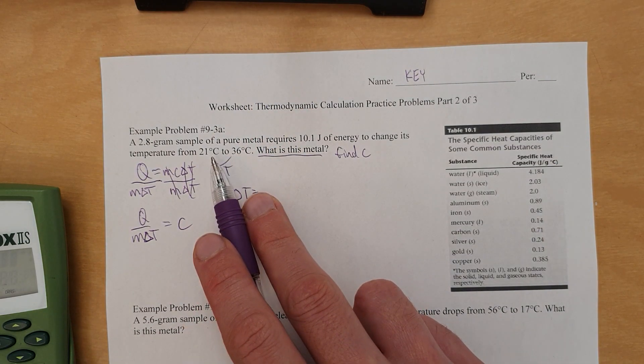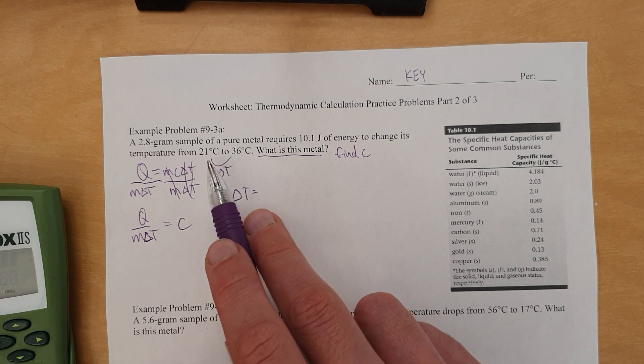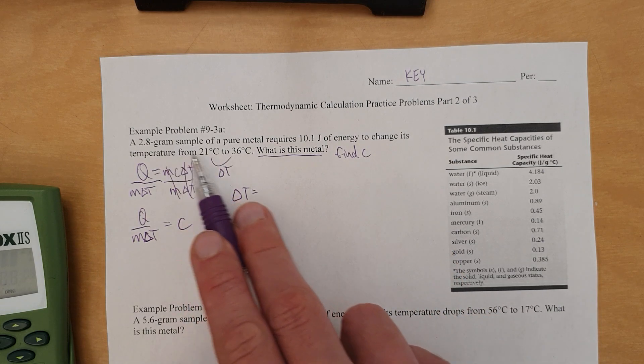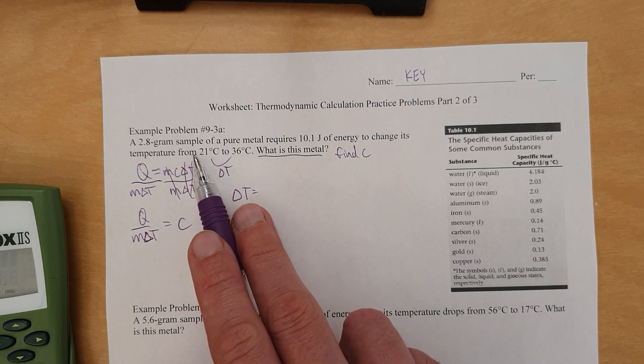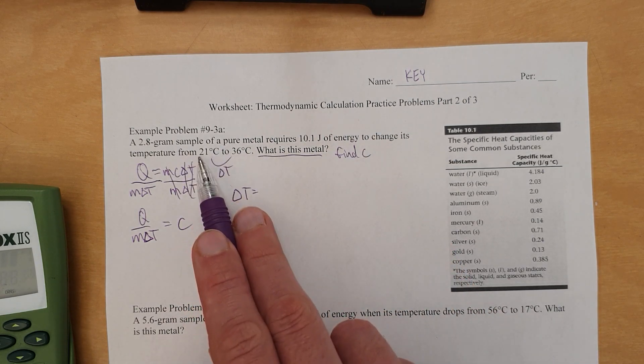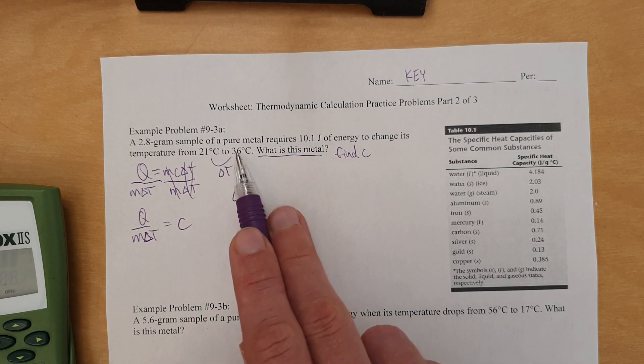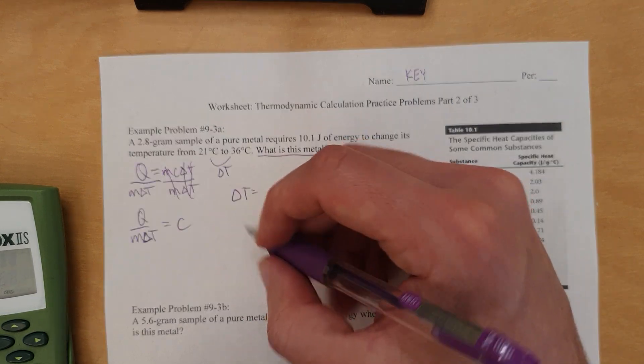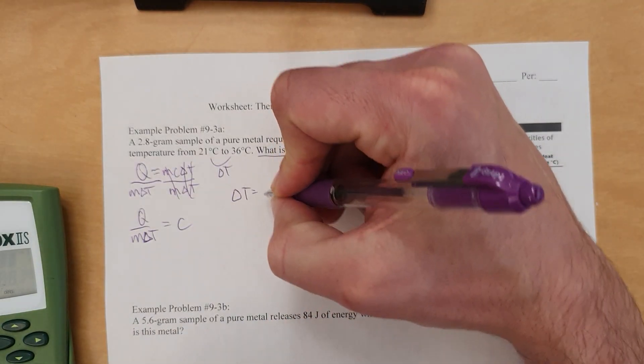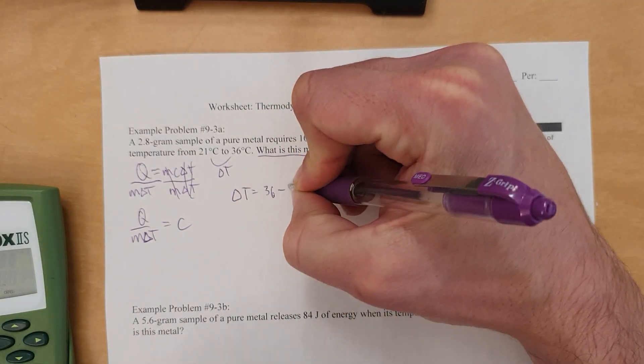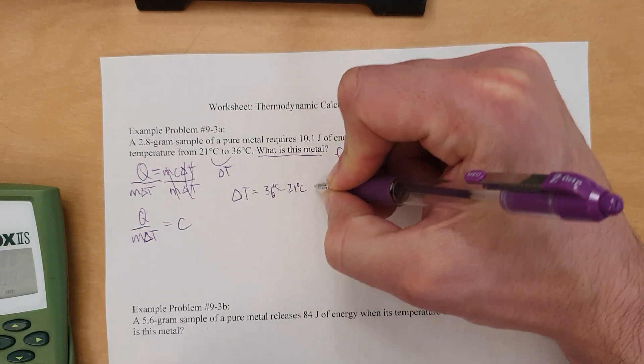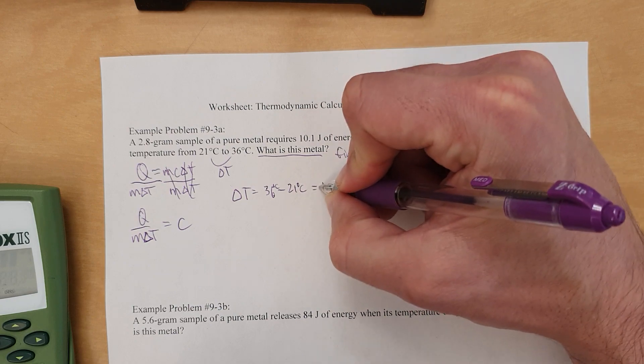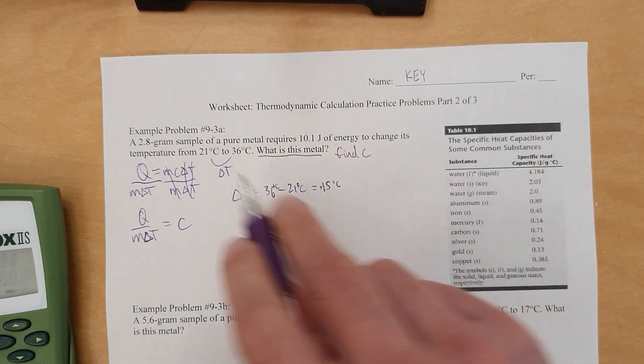So delta T equals, and well, it is final temperature minus initial temperature, but I tell people don't worry about that because they get confused and subtract the wrong ones. Just consider this: changes temperature from 21 to 36. So we should understand that when you're changing from 21 to 36, you start at 21 and end at 36. You end 15 degrees higher than what you started at. So if the temperature goes up 15 degrees, make sure you get a positive delta T. So let's subtract the big one from the small one to just make sure that we have a positive number.